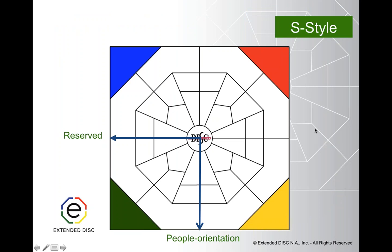All right, so let's go on to S styles. S styles — out of all four styles — are the hardest to recognize. The reason being is the D, I, and C are styles that are very clear cut, almost in your face, easy to recognize. I styles, when you look at the descriptors, are much softer, so much more challenging to recognize.